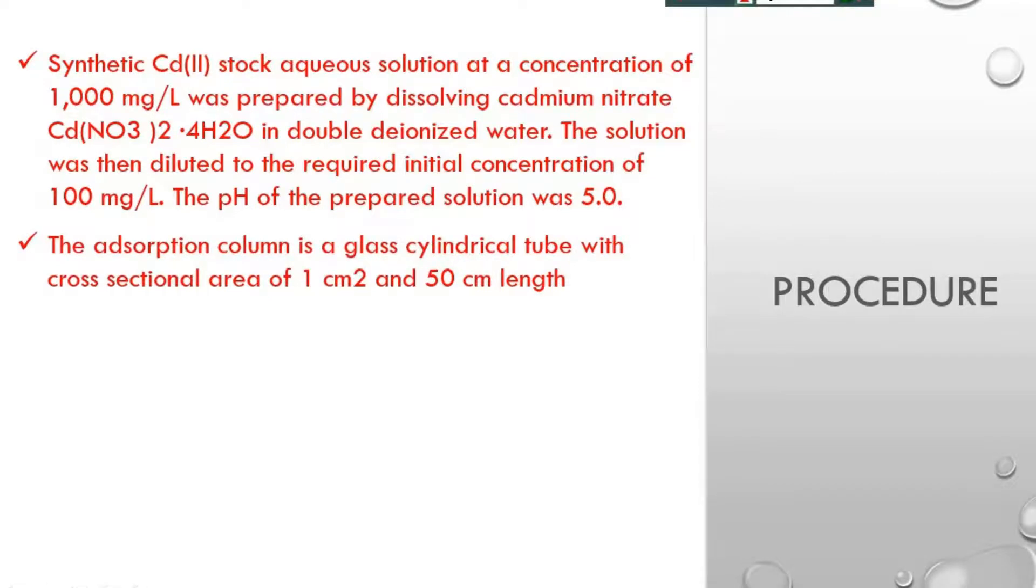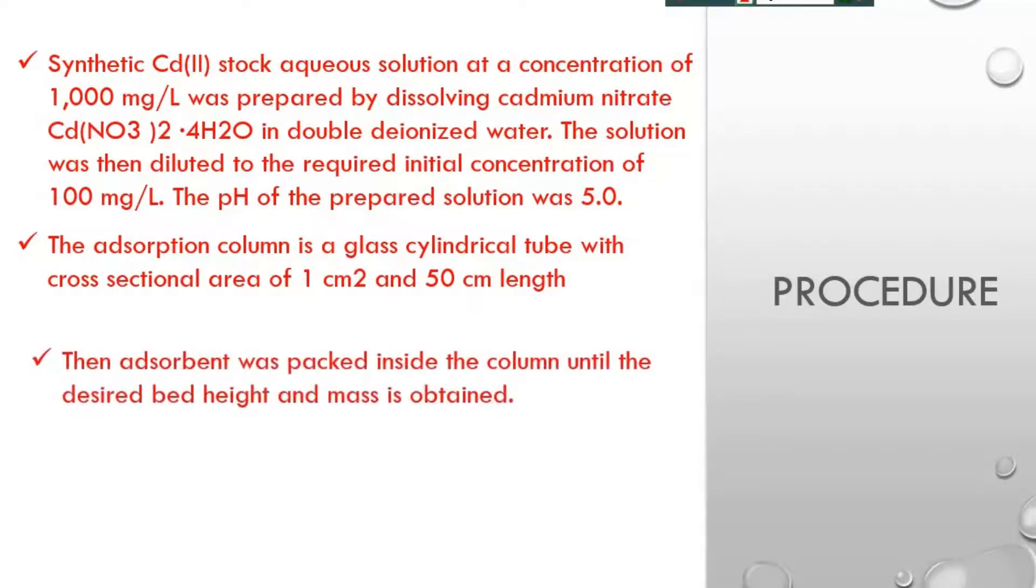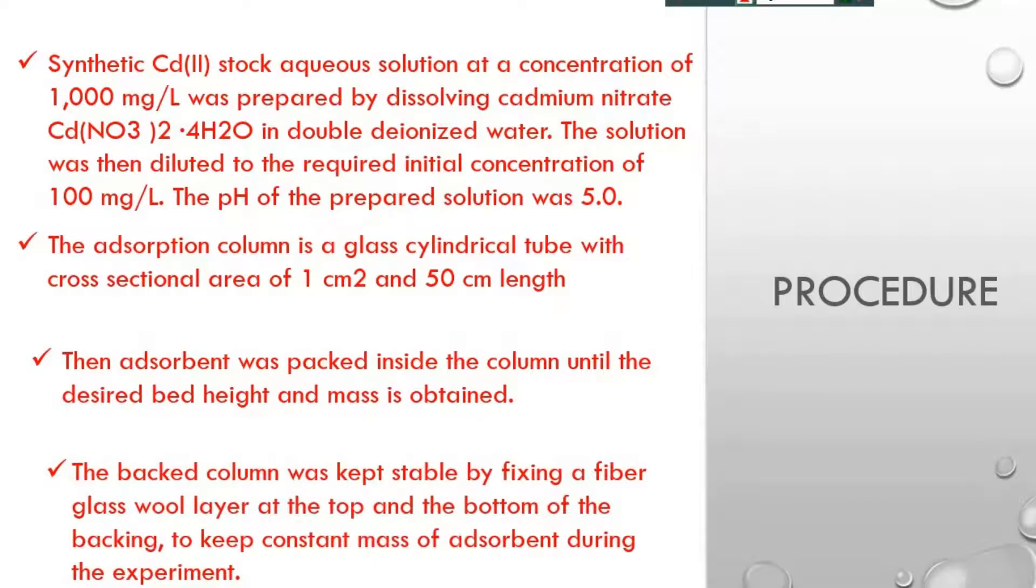Then the adsorption column is a glass cylindrical tube with cross sectional area of 1 cm² and 50 cm length. Adsorbent was packed inside the column until the desired bed height and mass is attained. The packed column was stabilized by fixing a fiberglass wool layer at the top and the bottom of the packing to keep constant mass of adsorbent during the experiment.